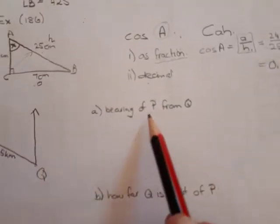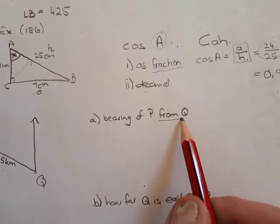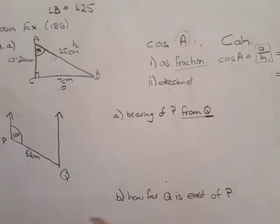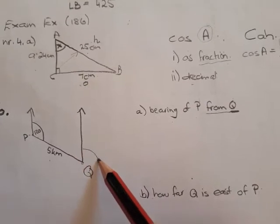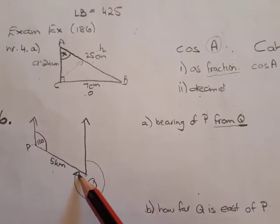The first question is find the bearing of P from Q. So remember from Q meaning you must start at the north line of Q. Starting at the north line of Q means they ask you the bearing of all this way around.